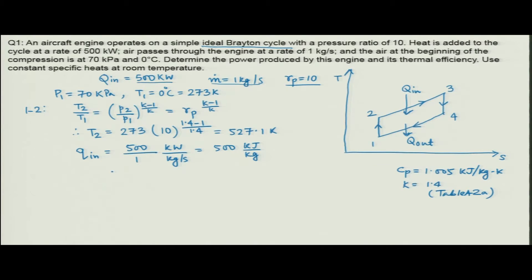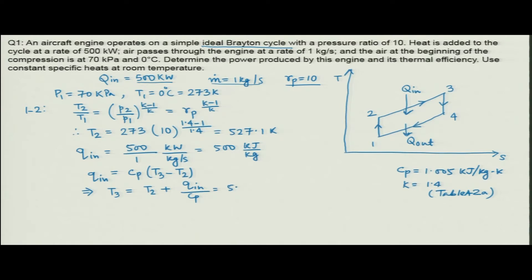From the first law of thermodynamics, Q_in equals the heat added between process 2 to 3, which happens at constant pressure. So T_3 = T_2 + Q_in / C_p = 527.1 + 500/1.005, which comes out to be 1024.6 Kelvin. That is the temperature after constant pressure heat addition.